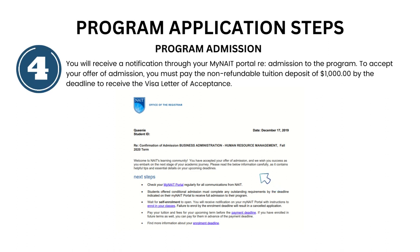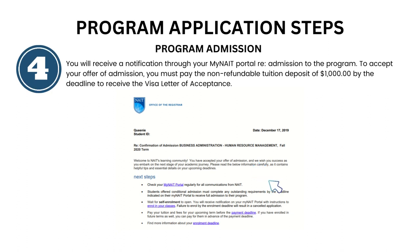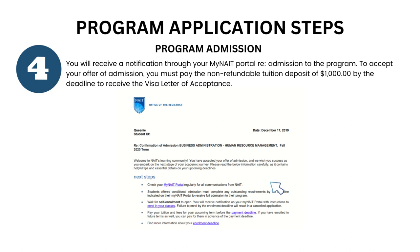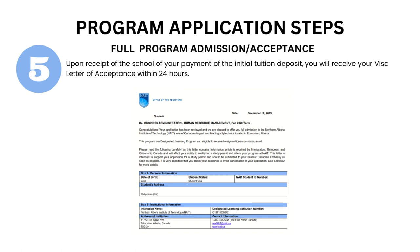The fourth step is program admission. At this point, you will receive a notification of admission to the program via your MyNAIT portal. To accept your offer of admission, you must pay the non-refundable tuition deposit of $1,000 Canadian dollars by the deadline, in order to receive the visa letter of acceptance — which is the most important document you will need to apply for your student permit. Shown on your screen is a sample letter that I received from the school for your reference.